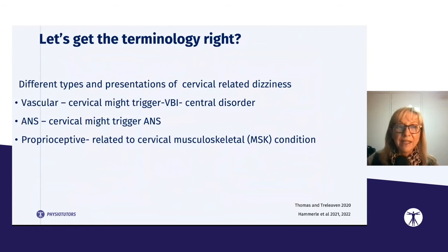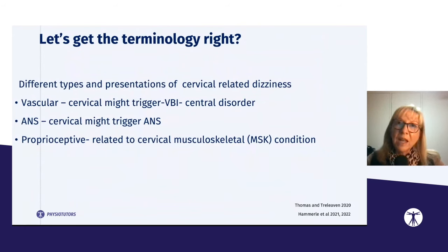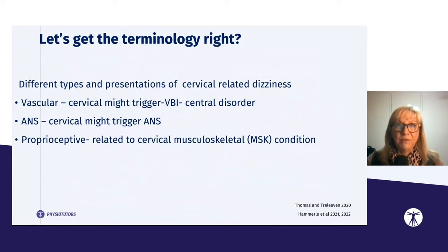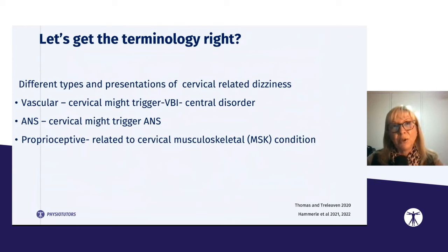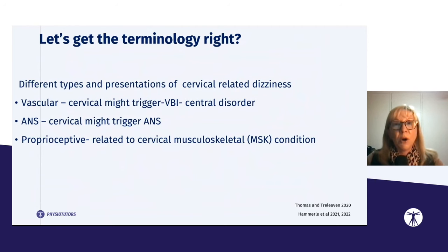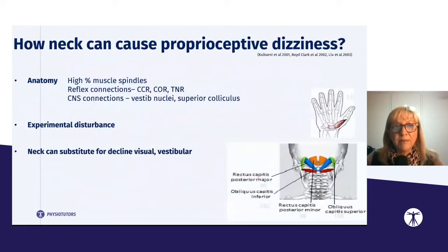In the vascular category, the cervical spine might trigger vertebrobasilar insufficiency — technically a central disorder, but triggered by neck movements and positions affecting the vertebral artery. The autonomic nervous system can also be triggered by the cervical spine due to close associations, particularly in the upper cervical region. Then there is proprioceptive dizziness, related to a cervical musculoskeletal condition. These different types present differently, so we need to be clear about what we mean when discussing the neck's role in dizziness.